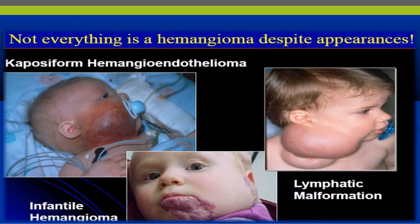Not everything is a hemangioma despite appearance. There are different things that look like hemangioma but they are really not hemangioma. For example, as you see on the image, the first is a kaposiform hemangioendothelioma on the cheek of a child, and on the right side there is a significant big swelling on the right neck of an infant which is due to lymphatic malformation.